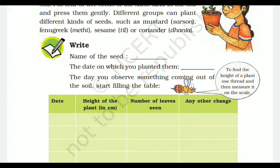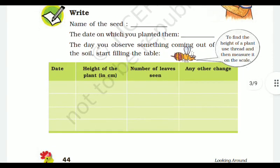After performing this activity, write the name of the seed you have taken and the date on which you planted it. A table is provided in which you have to mention the date, then measure the height of the plant using a thread in centimeters, record the number of leaves, and note any other changes — such as whether your leaves dried up.